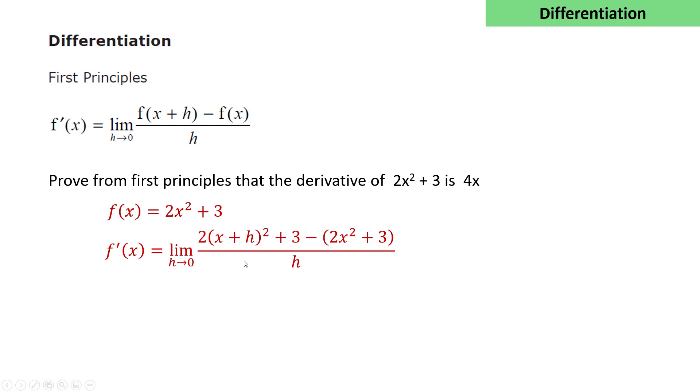The limit as h tends to 0 of 2(x+h)² + 3. That's f(x+h) minus 2x² + 3 divided by h. This is the definition. Notice that the constant terms will always cancel. We expand (x+h)².